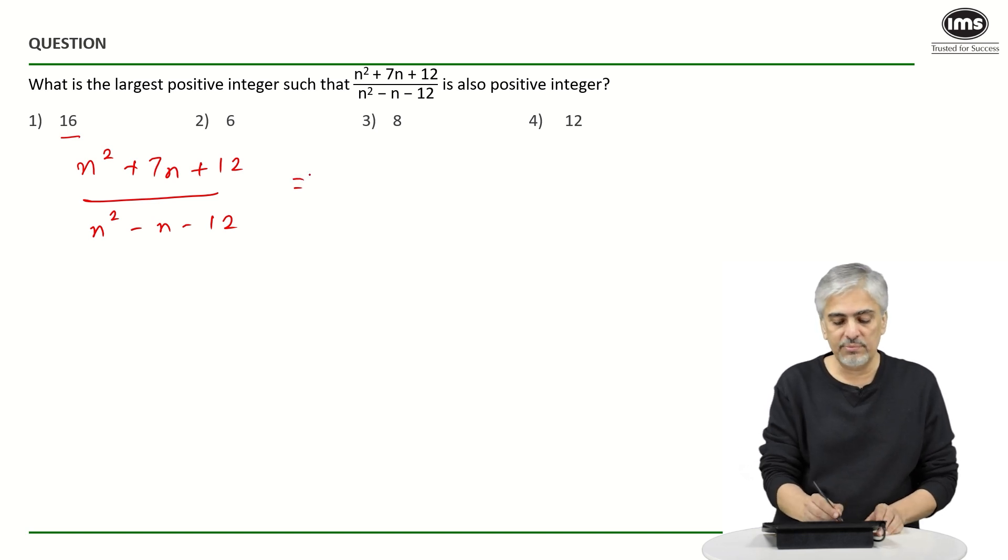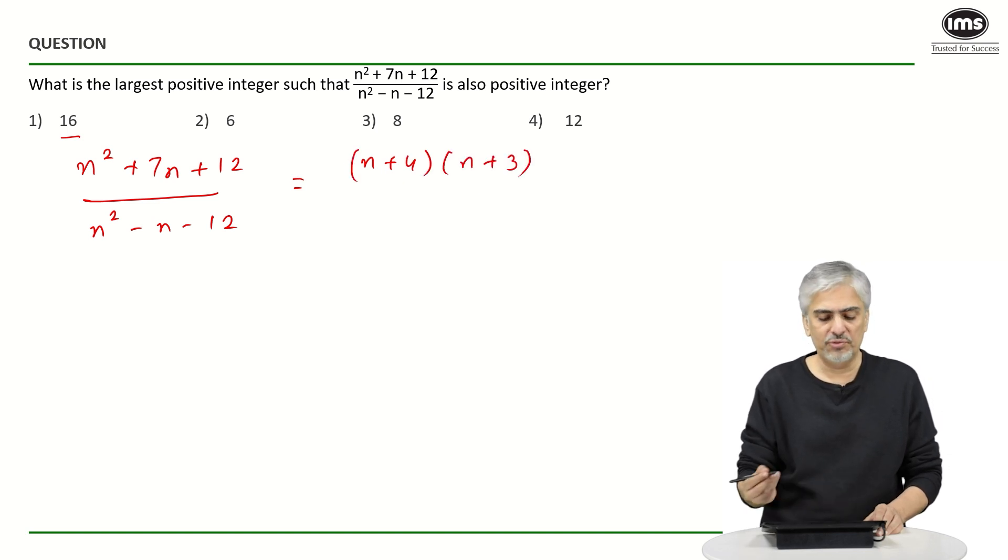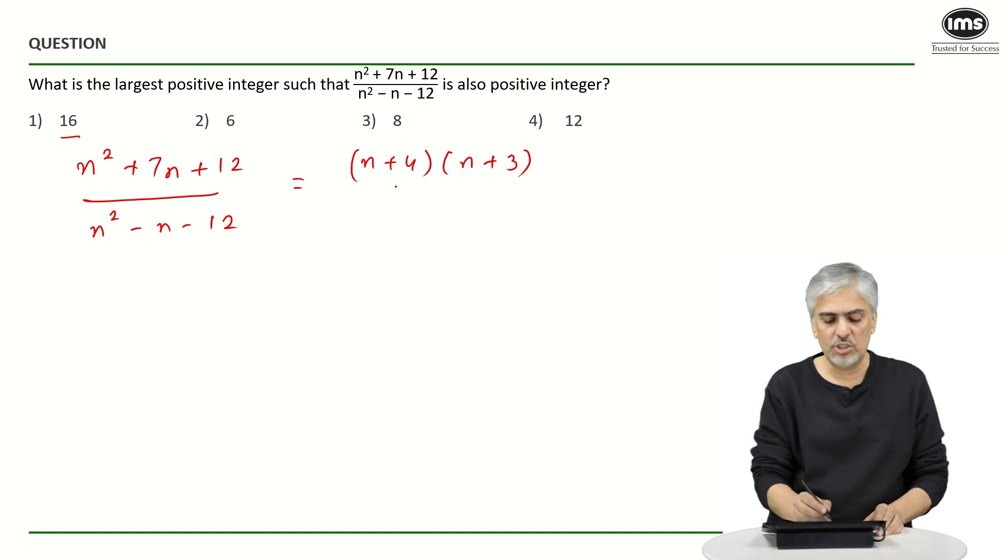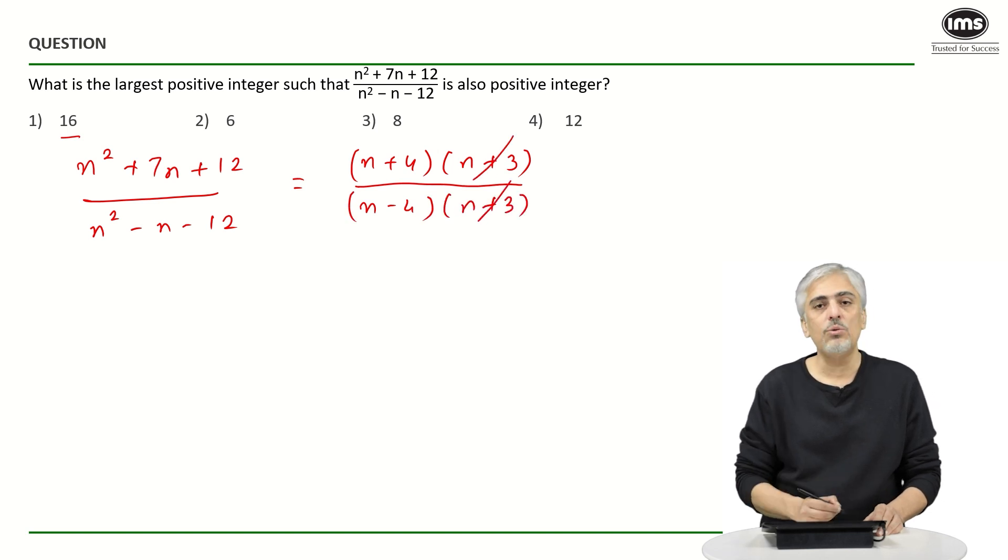The right approach would be to factorize both numerator and denominator. So n plus 4 into n plus 3 will be the factors for the numerator. 7 plus 4, 4 plus 3 is 7, and 4 times 3 is 12. Same way, the denominator can be factorized as n minus 4 and n plus 3. n plus 3 cuts out.